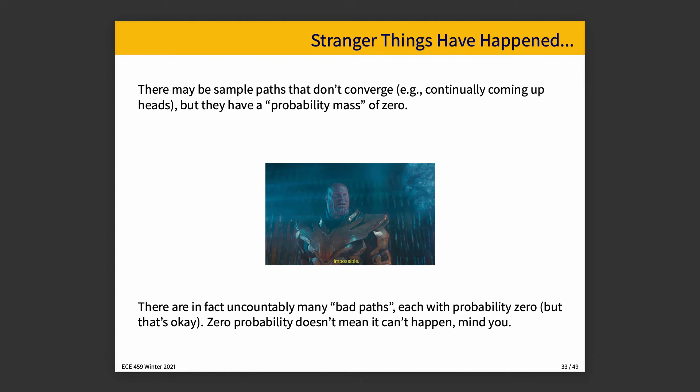Things that have probability zero, it turns out, aren't things that can never happen. This is just how probability zero is defined in probability theory. If it's truly impossible, then it's not even in the sample space — you can't flip a coin and have it come up six because that's just not happening. But something like landing on edge might have probability zero because it's virtually impossible, but not completely impossible.